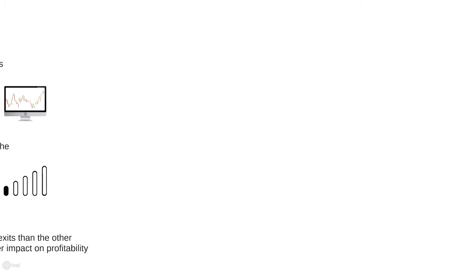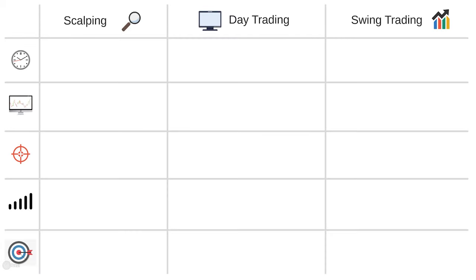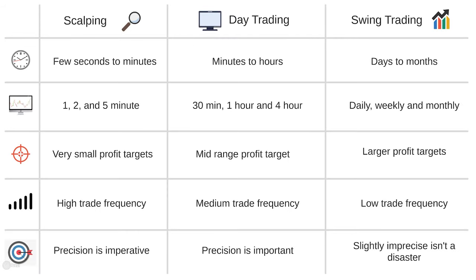Looking at the styles side by side, you can see the main differentiating factor is time. Each style looks at price movement over a longer timeframe than the previous, and so targets get bigger and the trade frequency reduces. The analysis within each style doesn't really change — it doesn't matter which style a trader is implementing, they will still be analysing multiple timeframes using whatever analytical methods they like to use. The frequency of that analysis will be affected however, as the price will develop quicker on the lower timeframes.